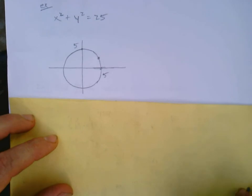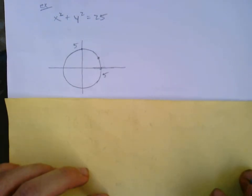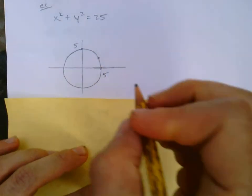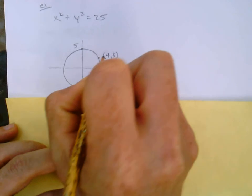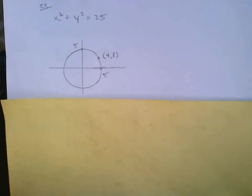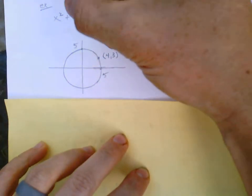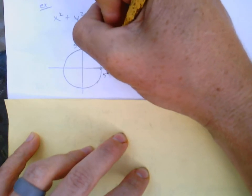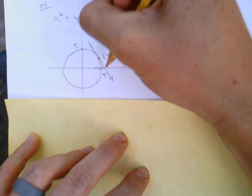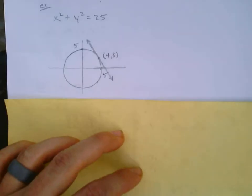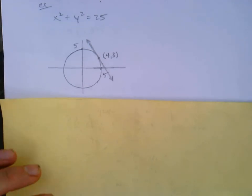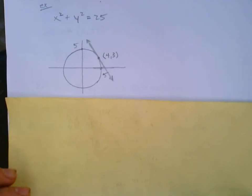It's certainly not a function, but think about tangent lines — a circle still has tangent lines at any point. For example, the point (4, 3) satisfies the equation, so it's on the circle, and we can imagine a tangent line passing through that point. Just because something is not a function doesn't mean it doesn't have tangent lines.